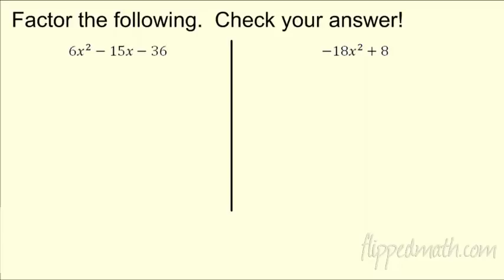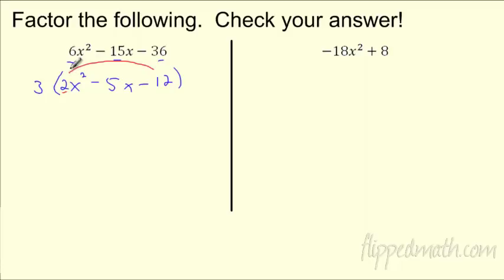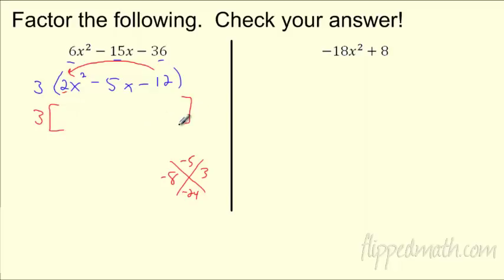Let's try one together. First, pull out the greatest common factor. Something divides all these — 3 works. Take a 3 out and I'm left with 2x squared. 6 divided by 3 is 2x squared, 15 divided by 3 is 5, 36 divided by 3 — that's great. This is the tricky one: there's a leading coefficient. I need to find what multiplies to negative 24 and adds to negative 5 to break down the factors. Using grouping, what's going to make that? It's negative 8 and positive 3, because negative 8 plus 3 is negative 5.